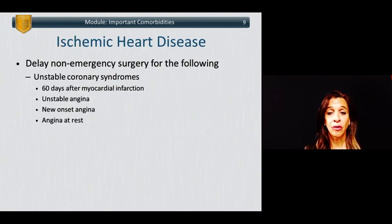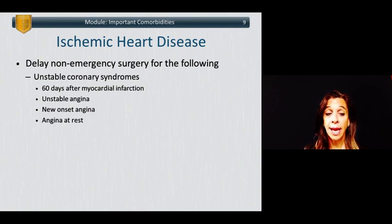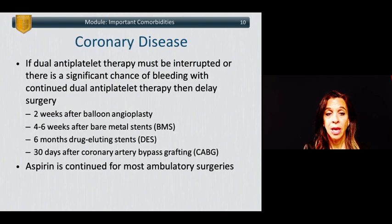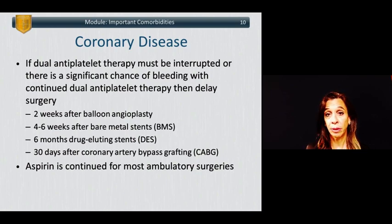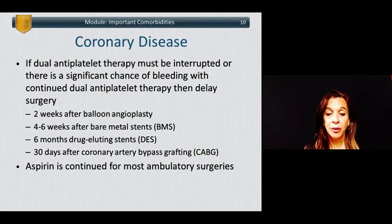You should also delay non-emergency surgery for unstable coronary syndromes, defined as a myocardial infarction within the last 60 days, unstable angina, new onset angina, or chest pain at rest. If dual antiplatelet therapy must be interrupted or there is significant bleeding risk, surgery should be delayed for a minimum of two weeks after balloon angioplasty, four to six weeks after bare metal stents, six months after drug-eluting stents — a new recommendation since 2016 — and 30 days after coronary artery bypass grafting. Aspirin is typically continued for most ambulatory surgery patients with coronary stents or significant coronary artery disease.